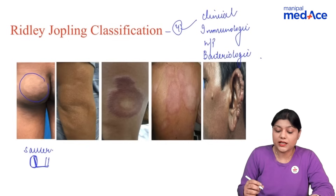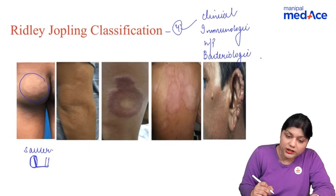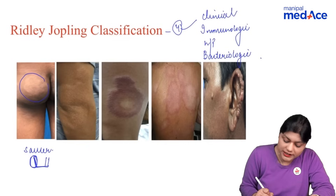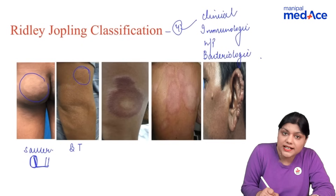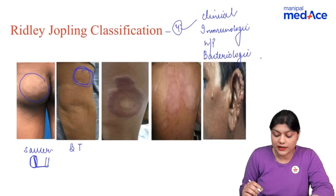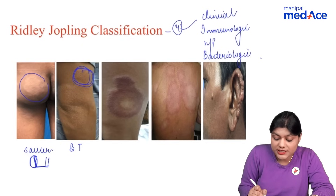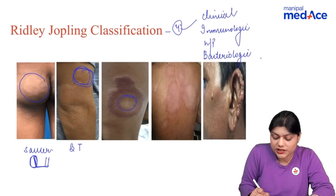In borderline tubercoloid leprosy, the characteristic feature is a satellite lesion. In borderline leprosy, there is a punched-out lesion.